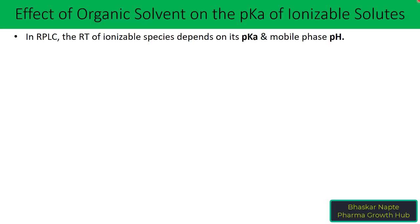In reverse phase liquid chromatography, the retention time of ionizable species depends on the pKa of the compound and the mobile phase pH value. The ionized species gets eluted early and the non-ionized species retains for a longer time or gets eluted late.